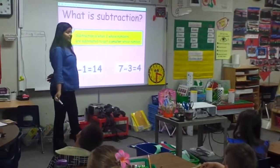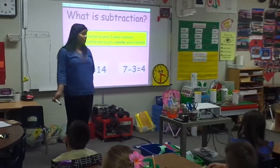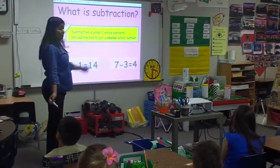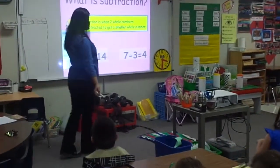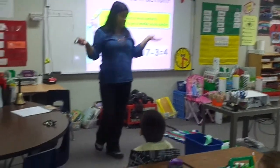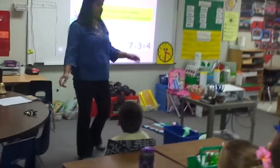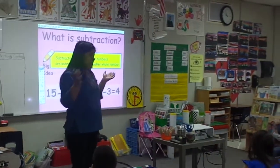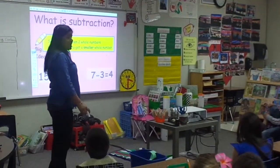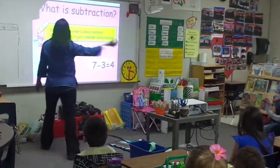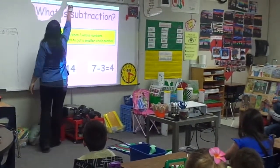Seven minus three equals four. So look, our number is getting smaller. That's what we call subtraction. When we're getting a smaller number, we're saying subtraction. We're getting a smaller number.